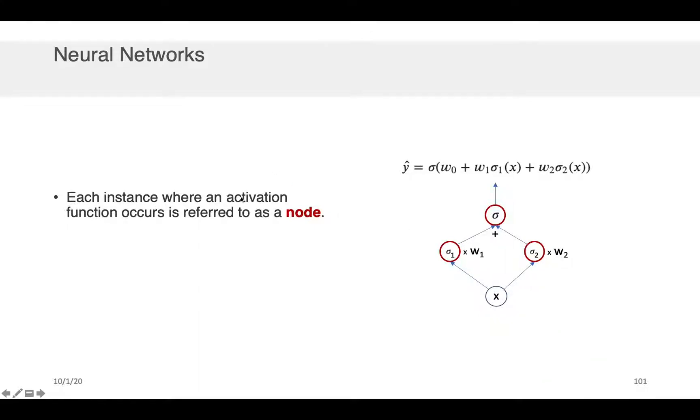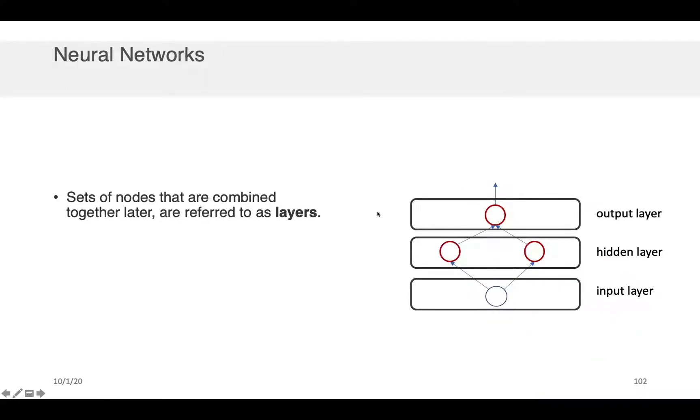Now, each instance where an activation function occurs is typically referred to as a node. So, in this case, because there's an activation function here and here and here, we would say that this has three nodes. And oftentimes, when we want to describe the properties of these networks, we will describe them in layers. So, we will, for example, talk about the place where we pass in the data as the input layer. This is where the x was. And then we will describe everything that's between this input layer and the output layer, which finally generated y hat, is called a middle layer or a hidden layer.